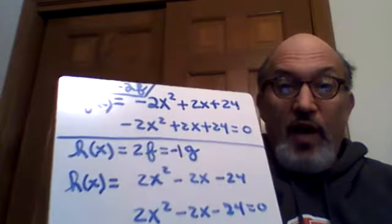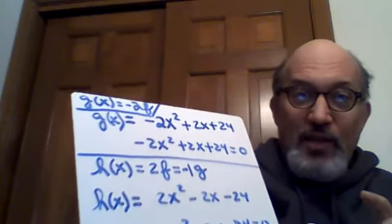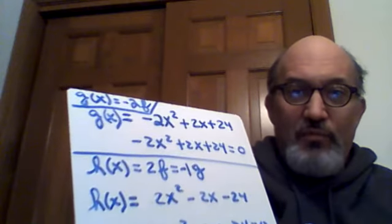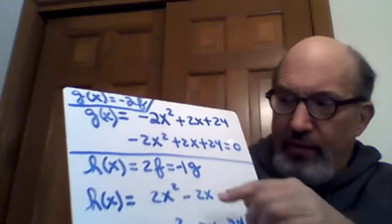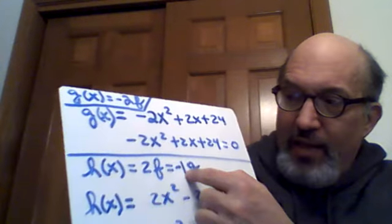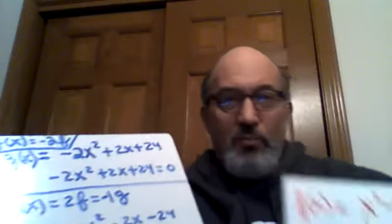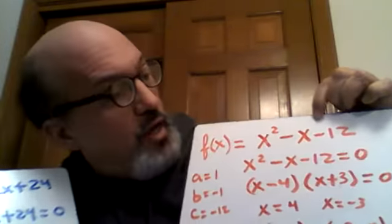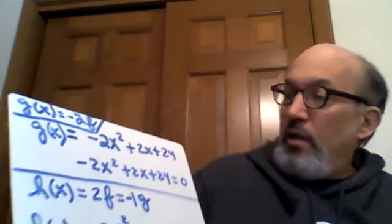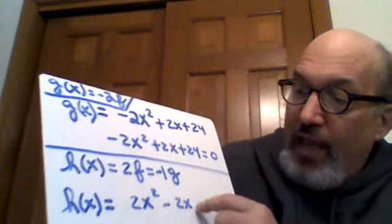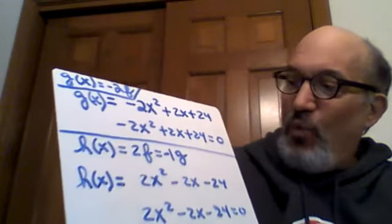Okay? Now, let's define h. Before we do anything with g, let's define h. h is going to be 2 times f. Positive 2 times f. And if you think about that, that means that h is going to be the opposite of g. Right? So go back to f and multiply each term by positive 2. You'd have 2x squared minus 2x minus 24. And that's what I'm calling h. And, of course, h is the opposite of g. It's negative 1 times g.